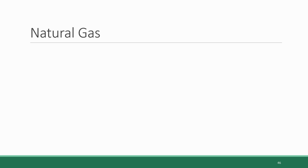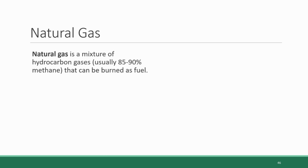The third and final fossil fuel type we'll be going through in this section is natural gas. Natural gas is a mixture of hydrocarbon gases that can be burned as fuel. The main constituent of the mixture is methane, which usually represents 85–90% of the blend.